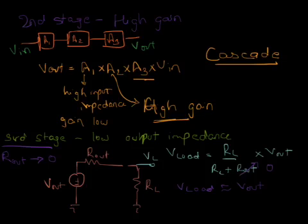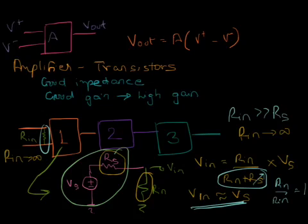So these are the three stages of a differential amplifier. The first stage is the stage where we have Rin tending to infinity. Second stage is when we have high gain. And the third stage is where we have the output impedance tending to zero.